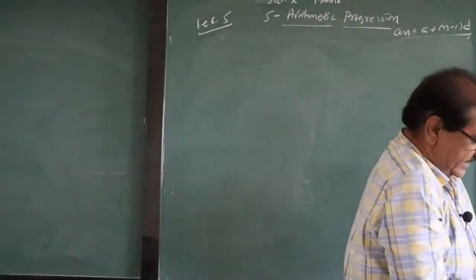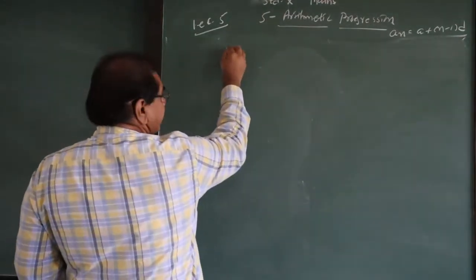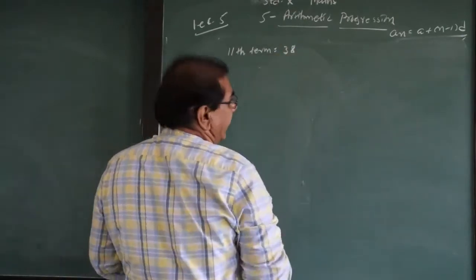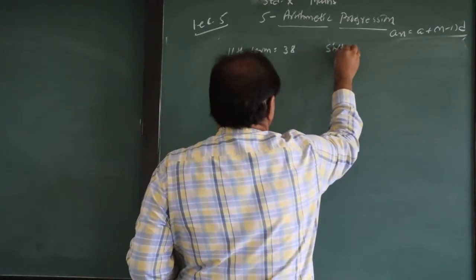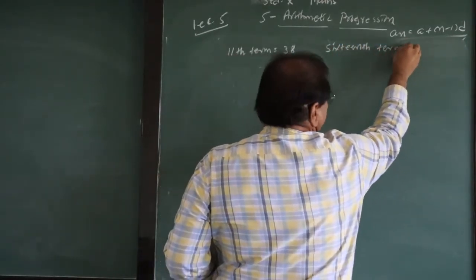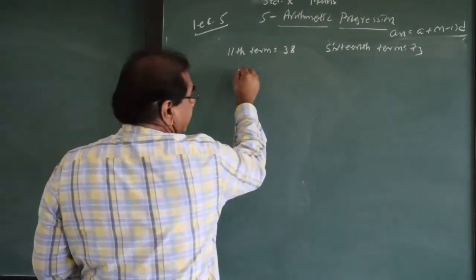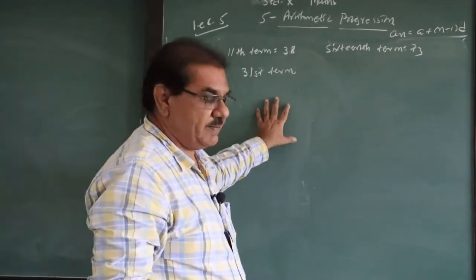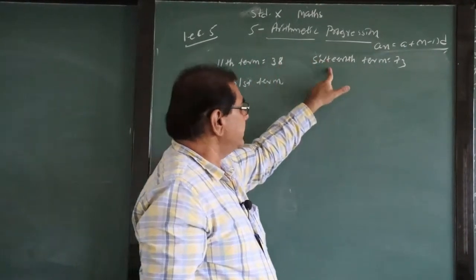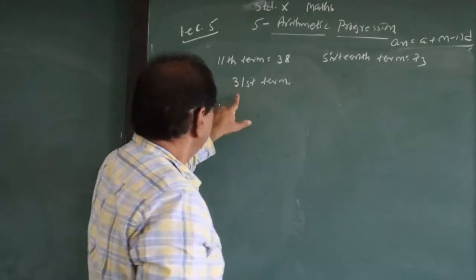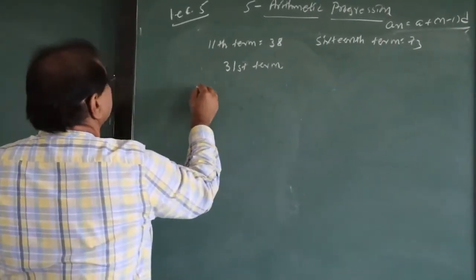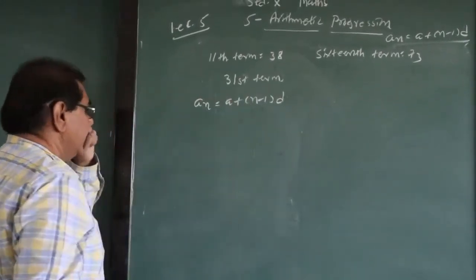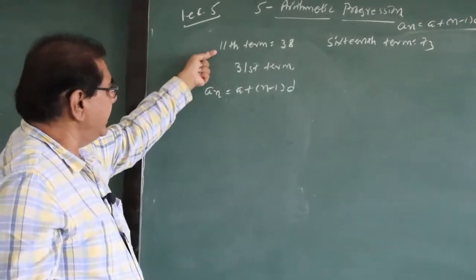The next question is somewhat different. In an AP, the 11th term is 38 and the 16th term is 73. You want to find the 31st term of the AP. Here, no A and no D are given, but we will start with what we have.